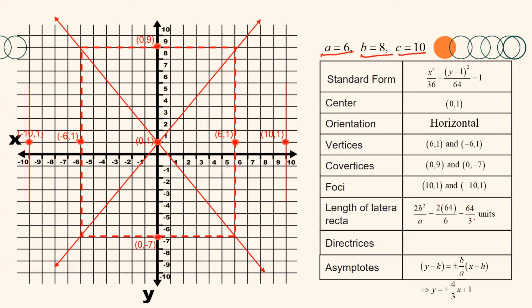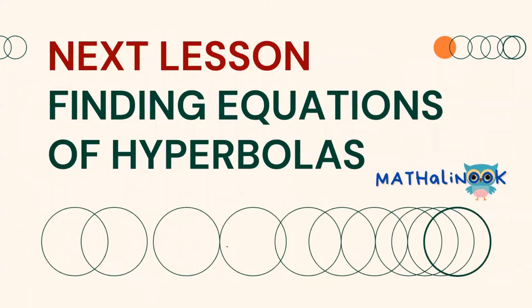Since the hyperbola is horizontally oriented, the directrices are vertical lines with equation x = h ± a²/c. Substituting a² = 36 and c = 10, the directrices are x = ±36/10 = ±3.6. Hence, the directrices are x = −3.6 and x = 3.6. With these elements, we can now draw the hyperbola. I hope you have understood the lesson. For our next video, we will discuss finding the equations of hyperbolas. Thank you for listening and see you in our next discussion.